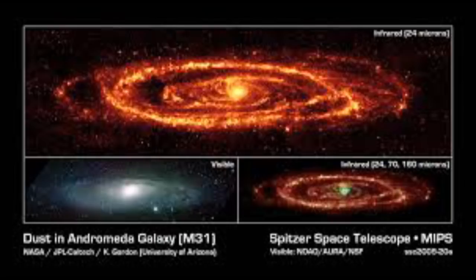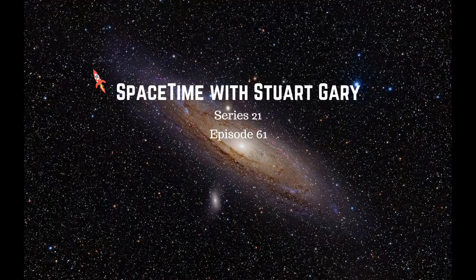Andromeda contains over a trillion stars and spans more than 220,000 light-years. By comparison, the smaller Milky Way is estimated to contain somewhere around 400 billion stars, spanning about 180,000 light-years across. While most studies have suggested Andromeda's at least two to three times the mass of the Milky Way, more recent measurements suggest they may be closer in mass than previously thought. You're listening to Space Time. I'm Stuart Gary.